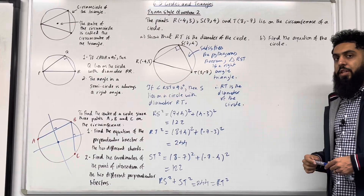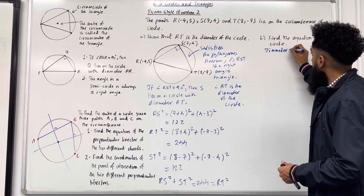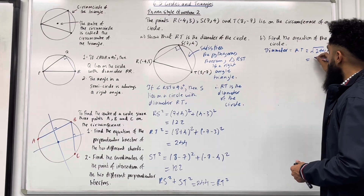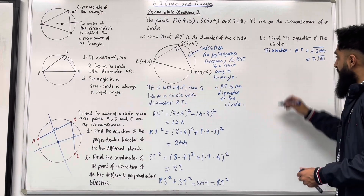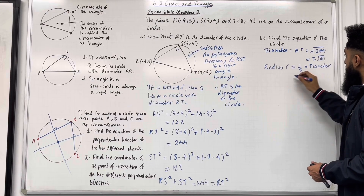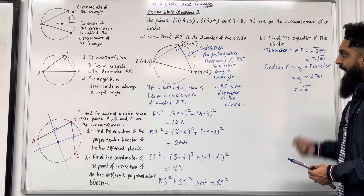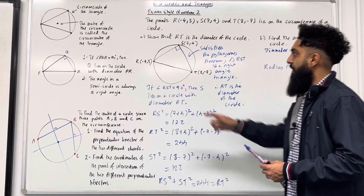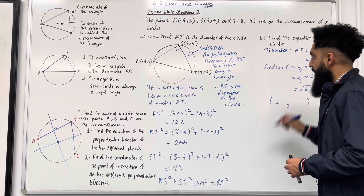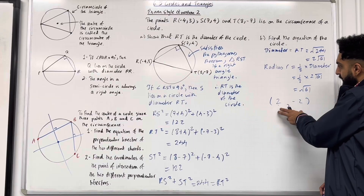Let's move on to part B: find the equation of the circle. We know that RT² = 244, so the diameter is equal to RT = √244 = 2√61. The radius r is half the diameter: r = ½ × 2√61 = √61. Now I'm going to find the centre of the circle — I need the midpoint of R and T: (−4 + 8)/2 = 2 and (3 + (−7))/2 = −2. So the centre is (2, −2) and the radius is √61.